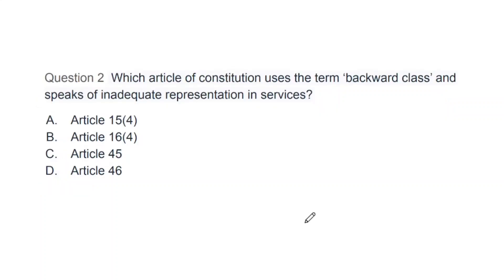Question 2: Which article of the Constitution uses the term 'backward class' and speaks of inadequate representation in services? Options: Article 5(4), Article 16(4), Article 45, and Article 46. The correct answer is B, that is Article 16(4).